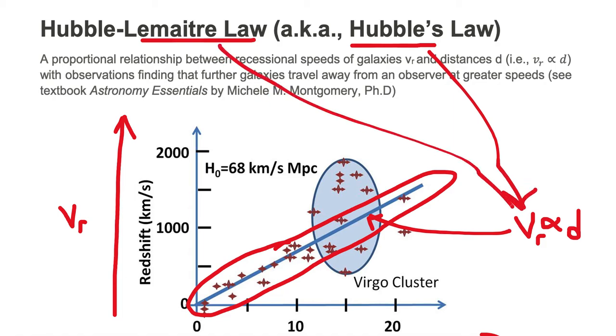The exact equation has a proportionality constant in it, where v sub r is equal to h0 times d, where h0 is known as Hubble's constant.